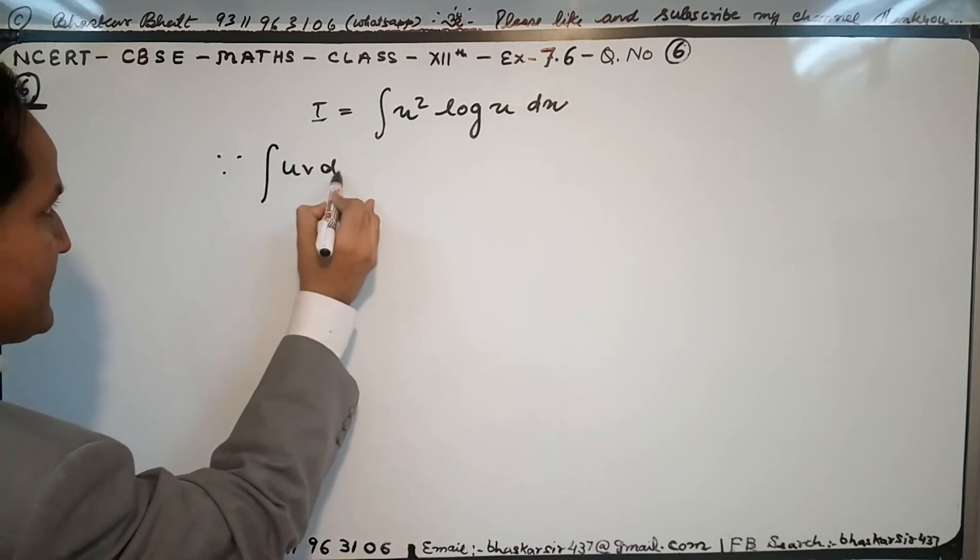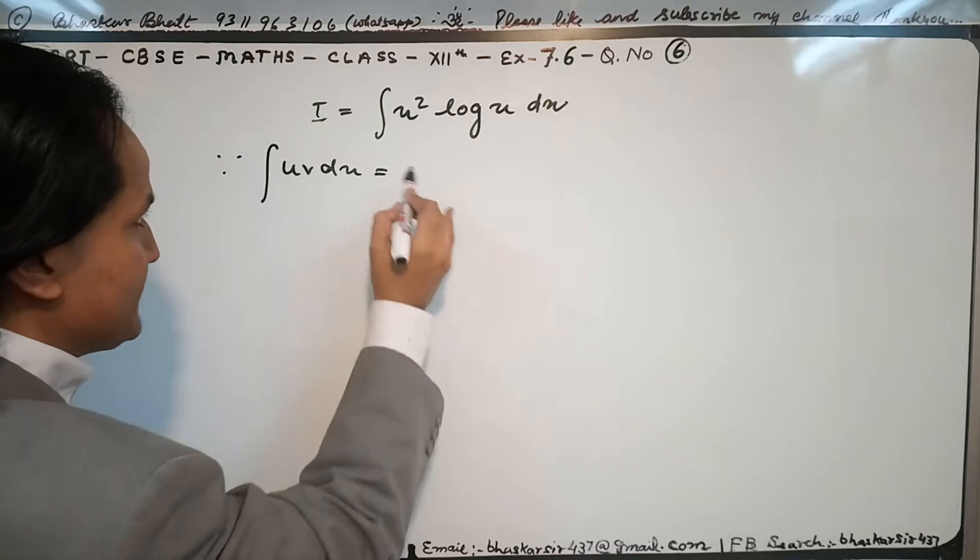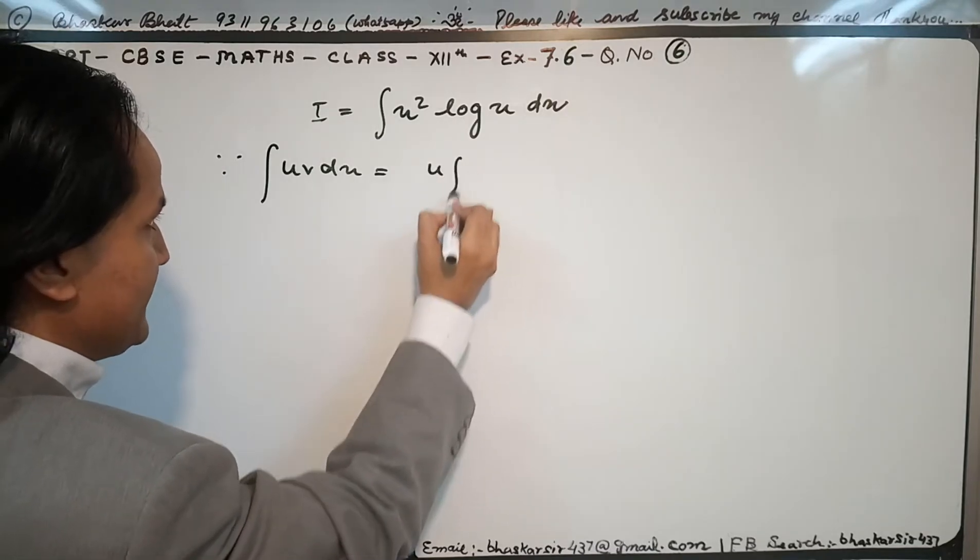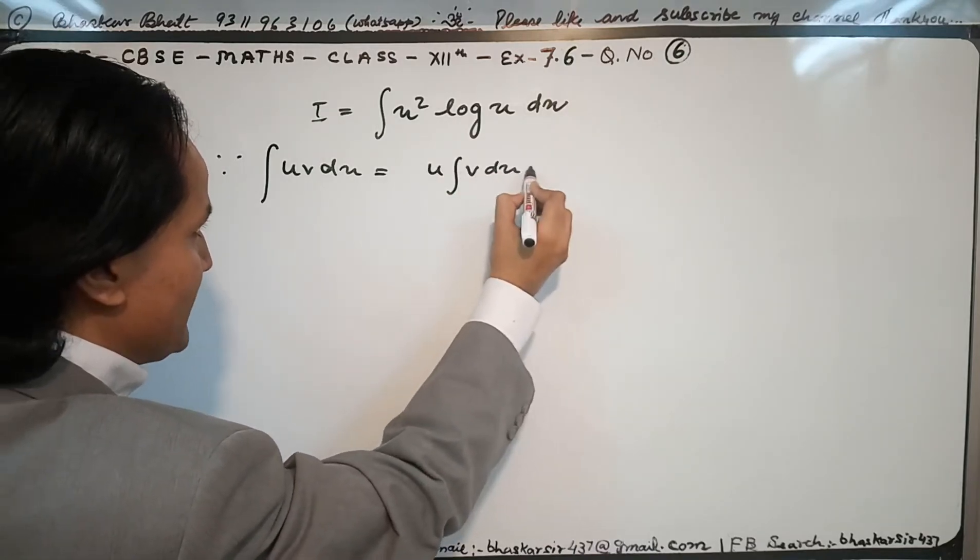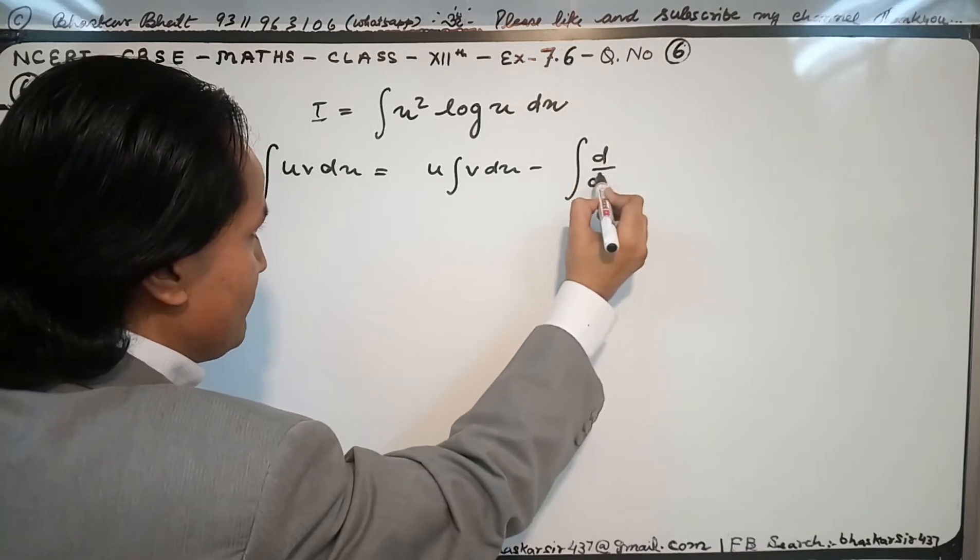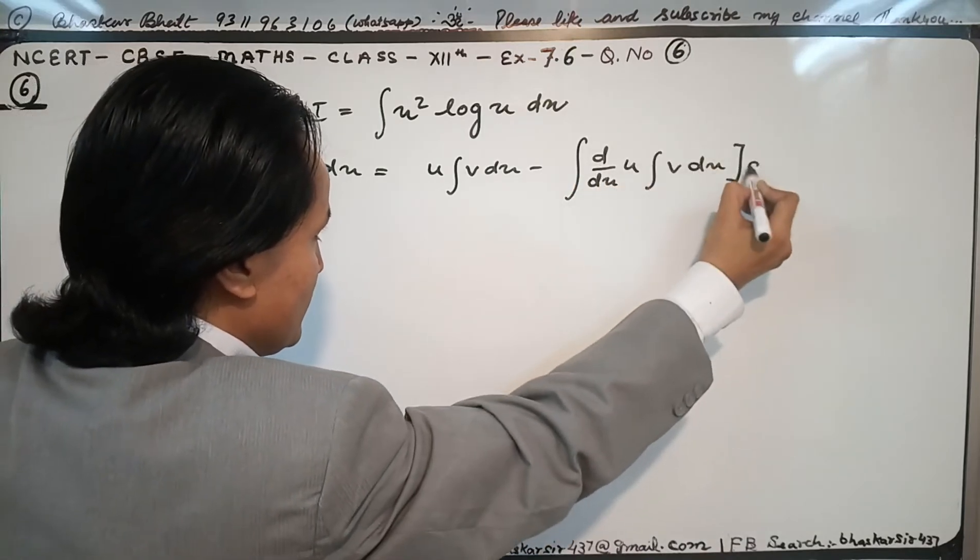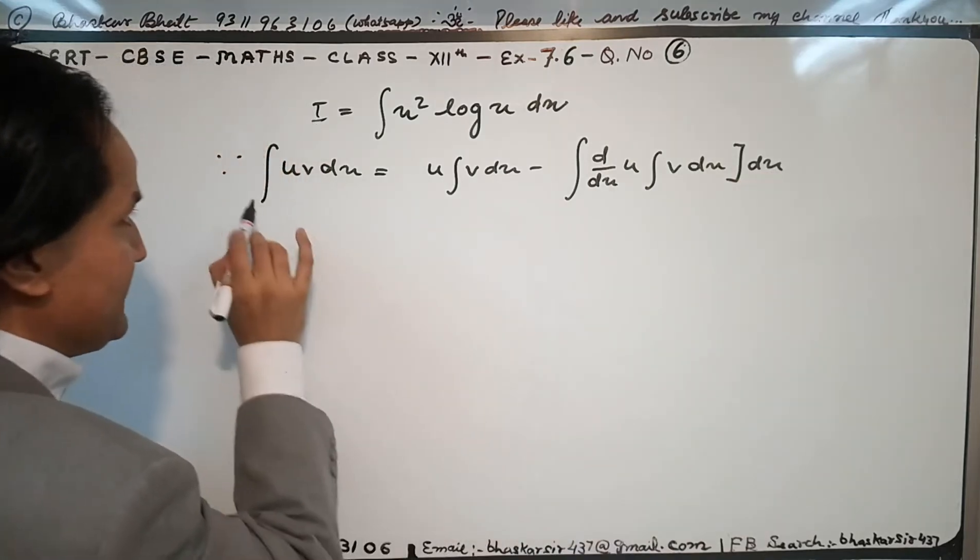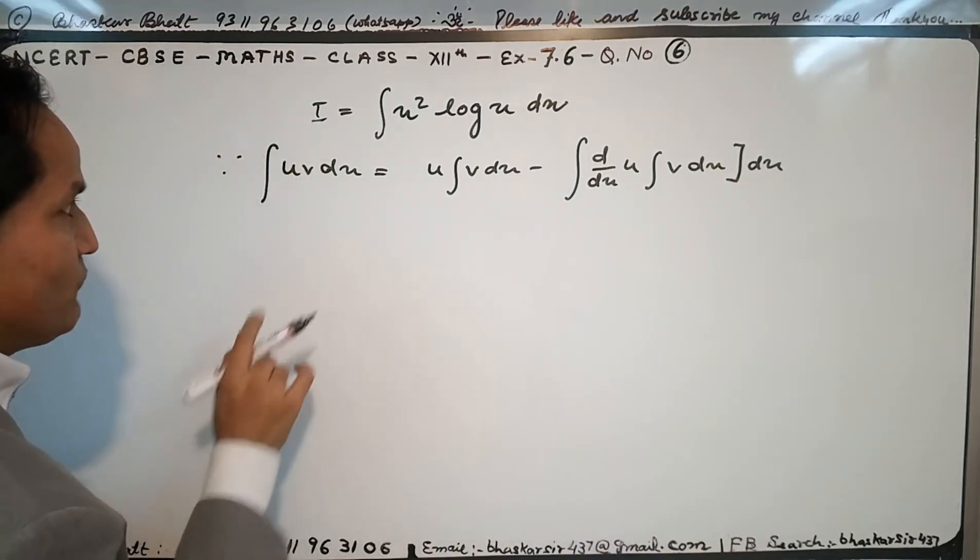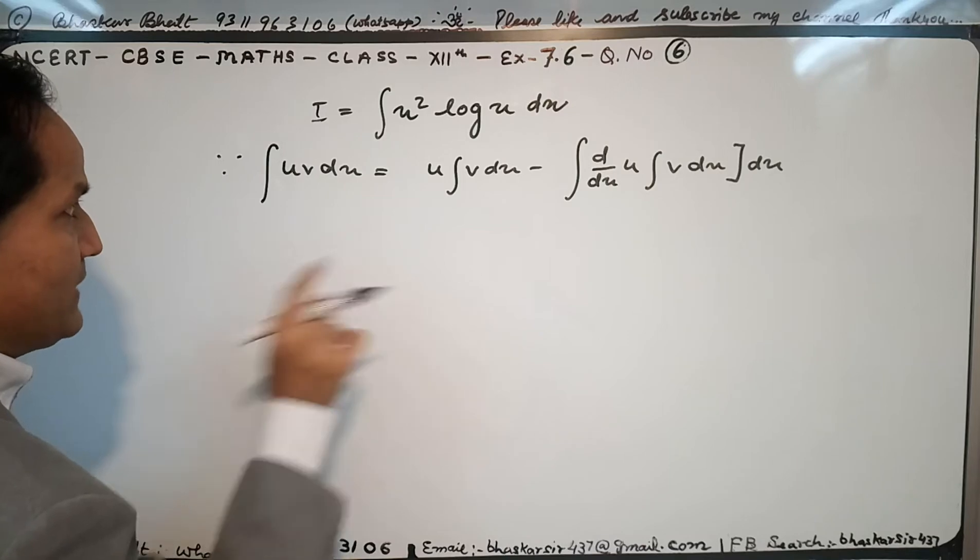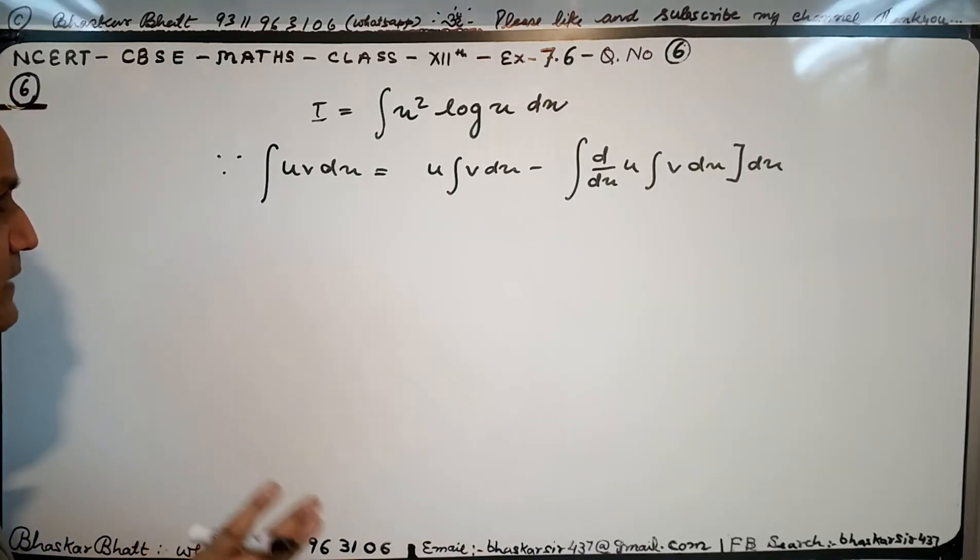If we have two functions u and v with respect to x, we will get first function times integral of second function, minus integral of derivative of first function times integral of second function. This is the technique we are using for integration by parts.